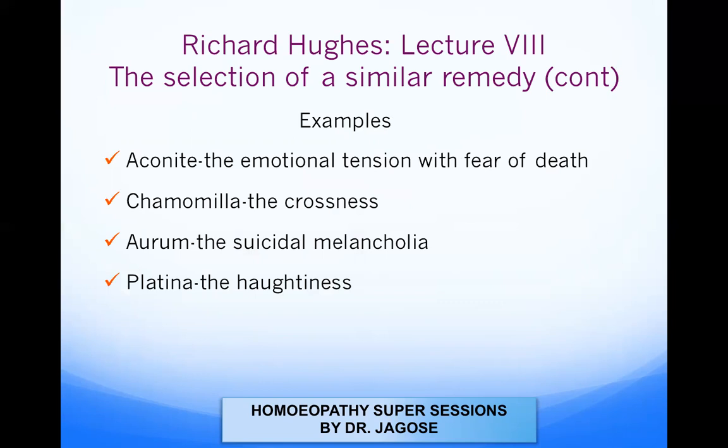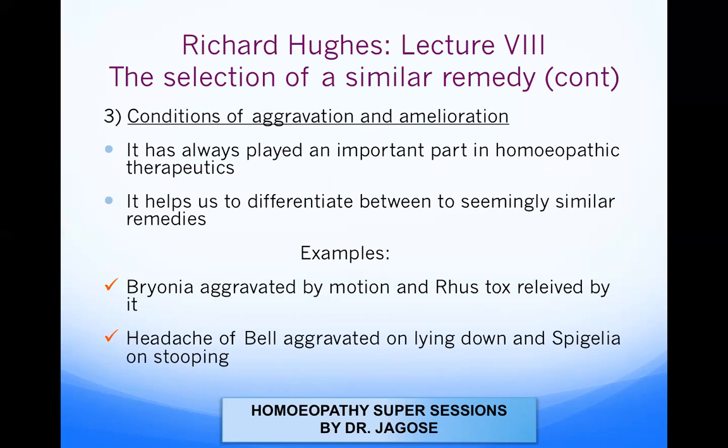Examples of disposition: Aconite — emotional tension with fear of death; Chamomilla — grossness, irritability, and ugliness of the child, constantly whining; Aurum — suicidal melancholia; and Platina — haughtiness. These are the examples Richard Hughes gives regarding the word disposition.